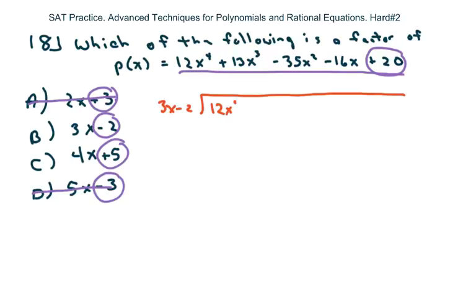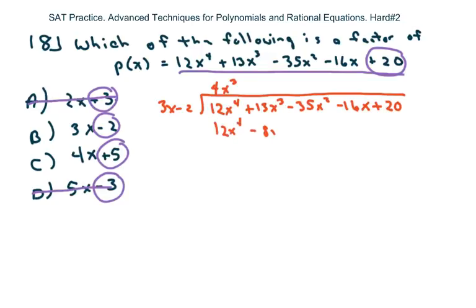We have 12x⁴ + 13x³ - 35x² - 16x + 20. You ask yourself what times 3x gives you 12x⁴, and that would be 4x³. Then multiply both terms to get 12x⁴ - 8x³. Subtract — the first term goes away and two negatives make a positive, so you get 21x³.